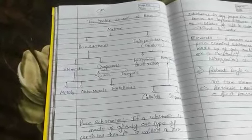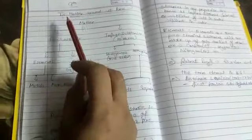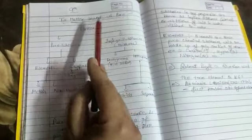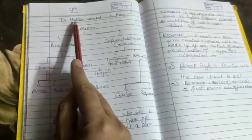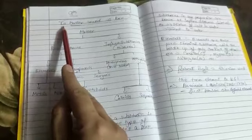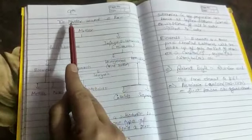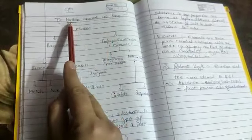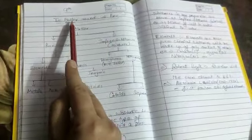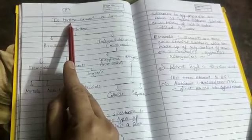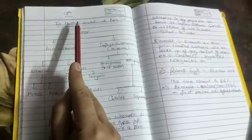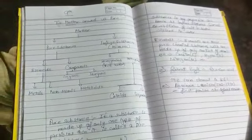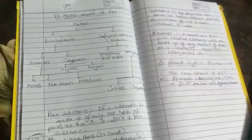Hello students, today we will discuss Chapter 2 of chemistry: 'Is Matter Around Us Pure?' The question is whether matter in your surroundings — your clothes, your pencil, your ear, your notebook — is pure or not. We will discuss the answer in this chapter.